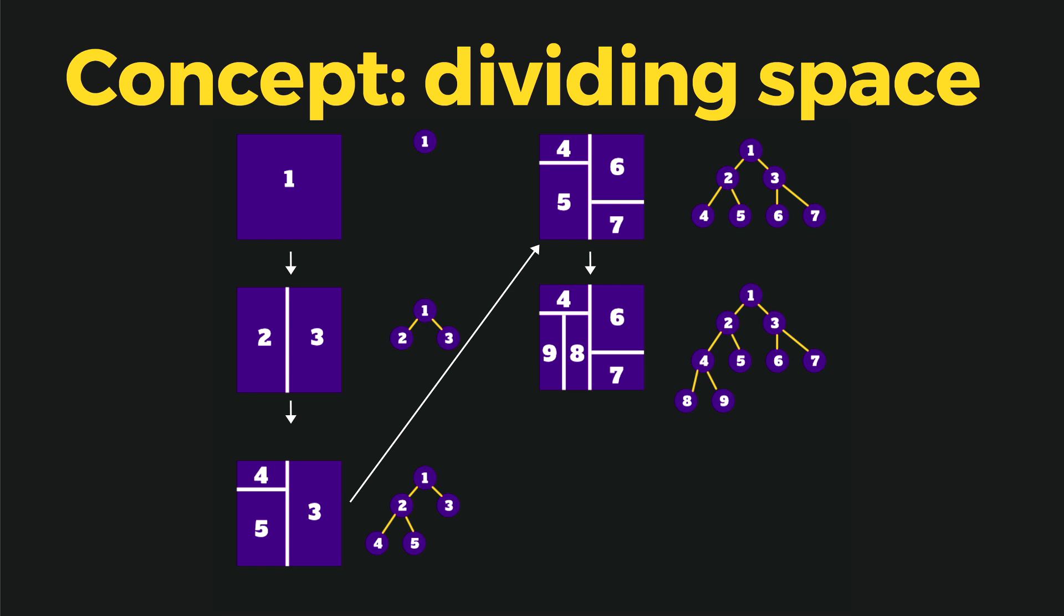Then we divide the first node, so the node number two, into two spaces, and for the new spaces we set two as the parent. And we go further and further until we cannot divide anymore or we have a set number of divisions and we don't want to have any more rooms than that.